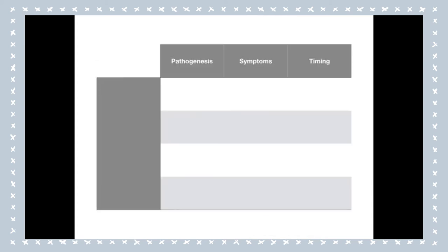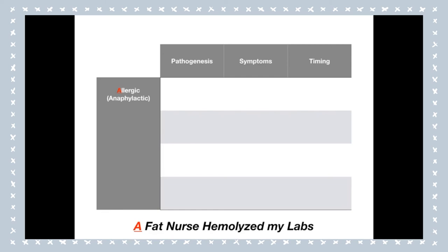The first type of transfusion reaction is the allergic, sometimes called anaphylactic transfusion reaction — A in A Fat Nurse. This is a type 1 hypersensitivity reaction that occurs due to plasma proteins in the blood the patient is receiving. Symptoms include itching or pruritus, urticaria, and if profound, septic shock — all classic allergic reaction symptoms. This occurs in about two to three hours. Importantly, patients with IgA deficiencies are at enormous risk of allergic transfusion reactions — IgA has A in it, and A for allergic and anaphylactic fits beautifully with the mnemonic.